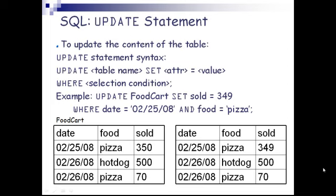UPDATE statement is used to update the content of the table. The syntax is: UPDATE table_name SET attribute = value WHERE condition. Example: UPDATE food_cart SET sold = 349 WHERE date = '02/25/08' AND food = 'pizza'. In the resulting table, the last row for date 02/25/08, pizza, has its sold value changed from 350 to 349.